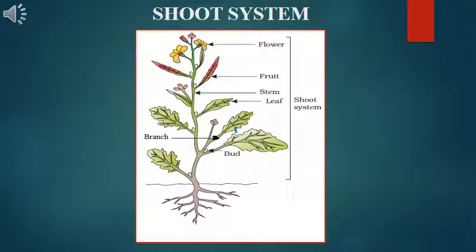The second main organ system is the shoot system that grows above the ground. It consists of stem, branches, leaves, flowers, fruits and seeds. Let's look at the functions of each part in detail.